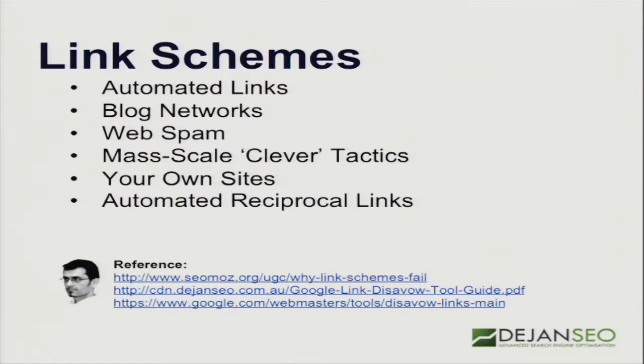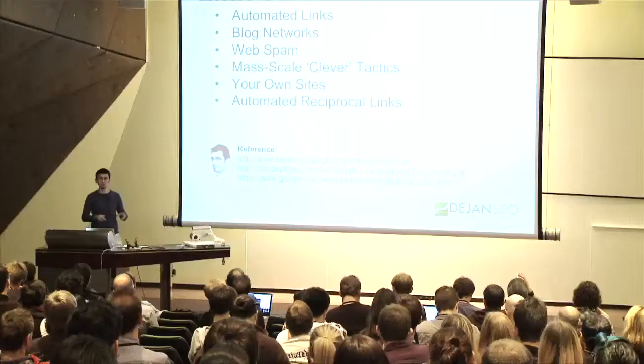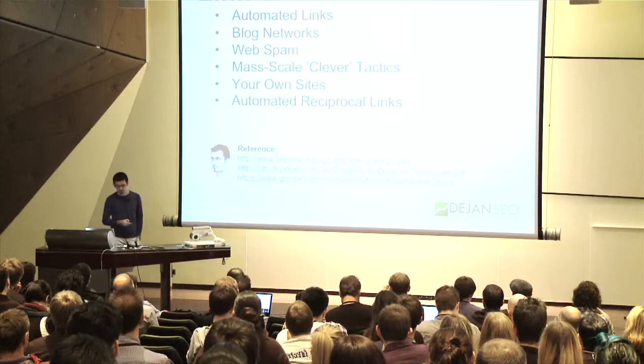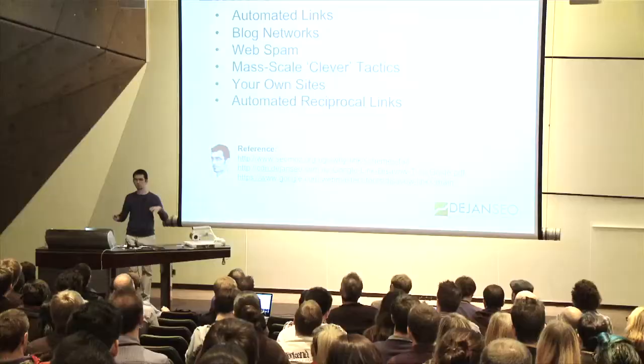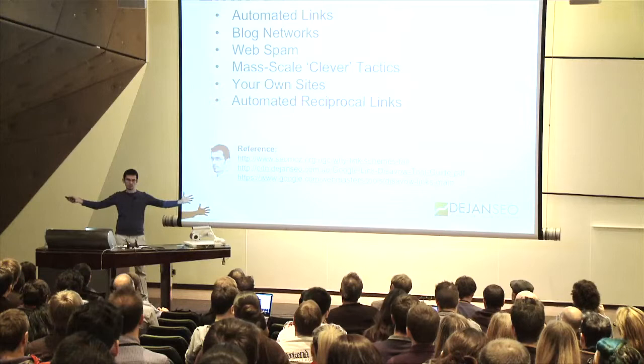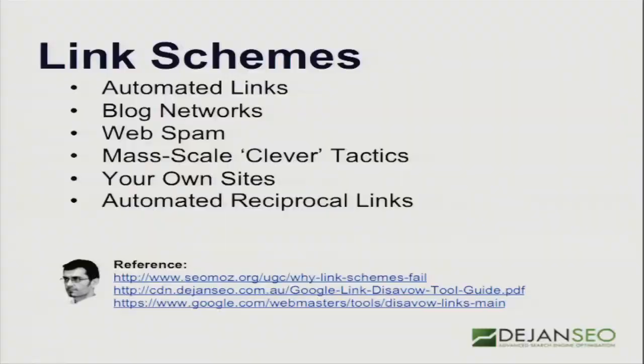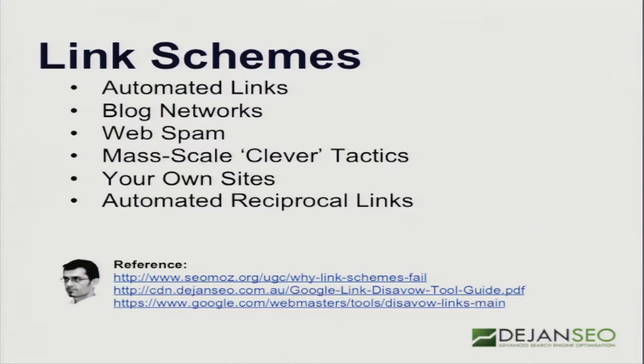Link schemes: basically anything that you've thought of as a great idea to mass-scale, automate, or manipulate in terms of links and anchor text — anchor text being the keyword contained within the link. I spoke to somebody who created a plugin that had a keyword in it, became very popular, and when you installed it, it added a link. It became so popular that many spammy websites started using it. A plugin that gives you a link could be on a porn site or any number of dodgy sites. So by creating a widget thinking you'll get lots of links, you could get links from a lot of bad places.